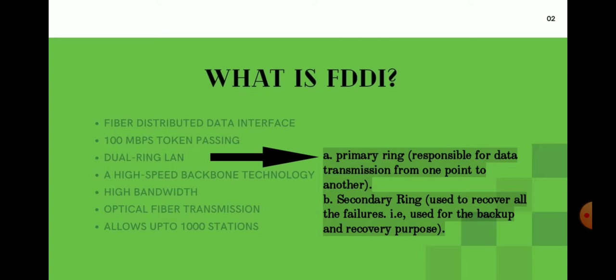FDDI technology allows transmission of data in a LAN over fiber optic cables. Since fiber optic cables are used, the transmission speed is very high. The data rate it can support can be up to 100 to 200 Mbps, and it uses a dual ring strategy to transmit data.